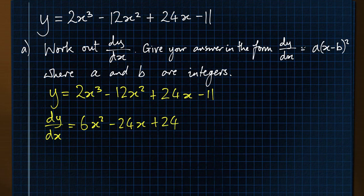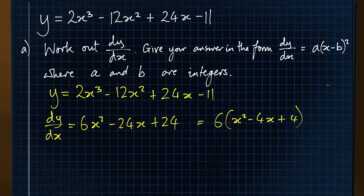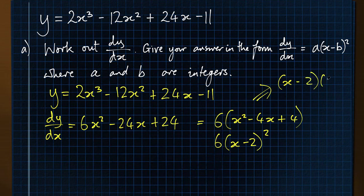To give the answer in the form a times x minus b squared, I'm looking for an integer factor of the whole expression. That factor is clearly 6, so I can write 6 times the quantity x squared minus 4x plus 4. Then I need to factorise x squared minus 4x plus 4 in the form x minus b squared — that's x minus 2 squared, since x minus 2 times x minus 2 gives minus 4x in the middle and plus 4 at the end. So the first part is done.